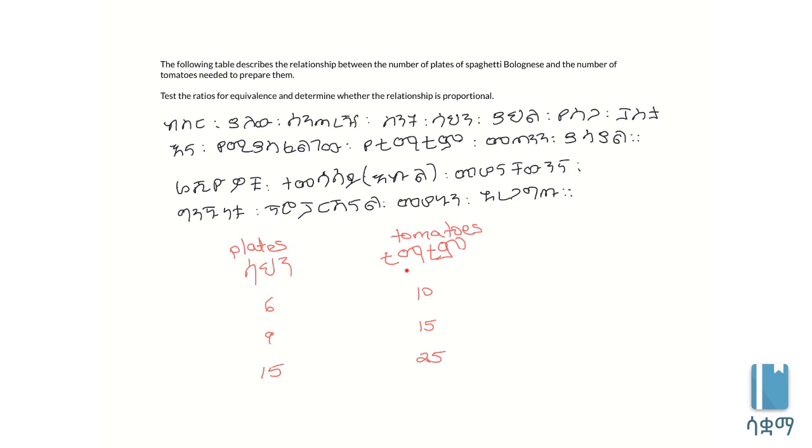Tomatoes per plate. Tomatoes per plate gives us tomatoes divided by plates for each entry. Tomatoes per plate - we'll calculate this ratio for each pair of values.